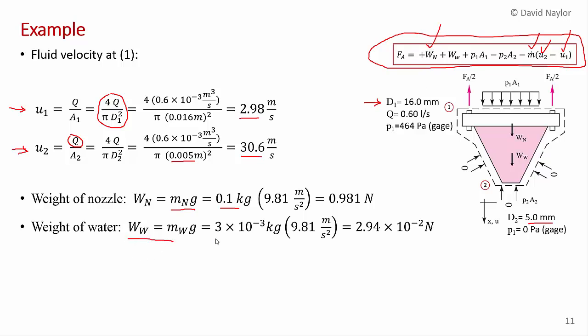And the weight of the water. You're told in the problem statement that the weight of the water is 3 times 10 to the minus 3 kilograms times 9.81, and we get this 2.94 times 10 to the minus 2 newtons. That's a pretty small number, normally negligible, but I'm included here just to demonstrate how you might include the weight of the water. In another problem, if we had a very big nozzle, for example, it could be significant.